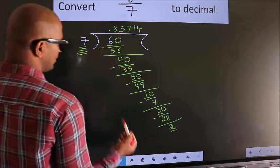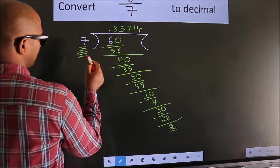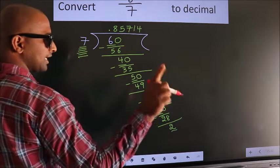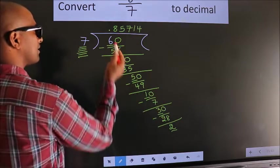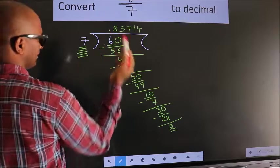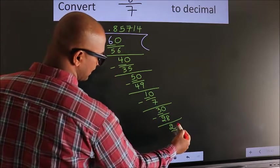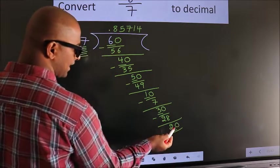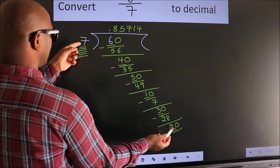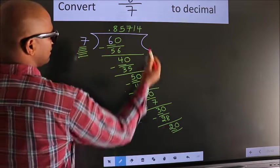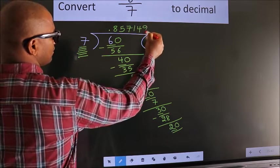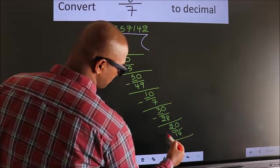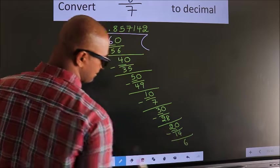Here we have 2, here 7. 2 is smaller than 7. And we already have the decimal, so we can directly take 0. So 20. A number close to 20 in the 7 table is 7 twos, 14. Now we subtract. We get 6.